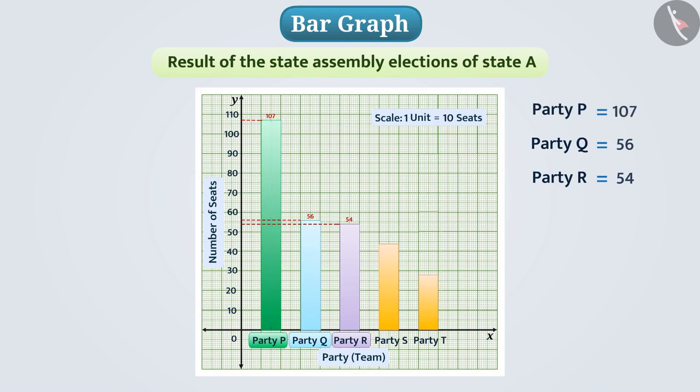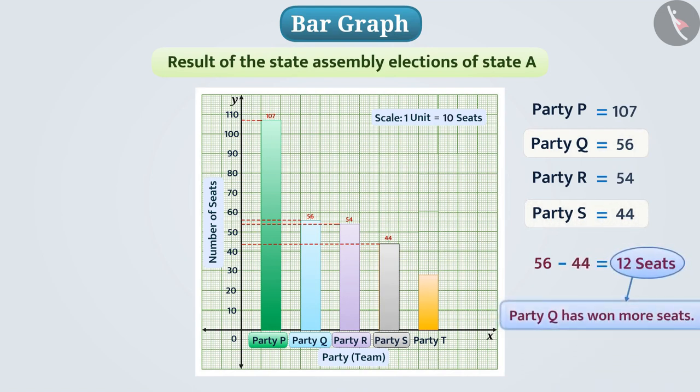Can you tell how many more seats did party Q win than party S? Absolutely right! We see that party Q has won 56 seats while party S has won 44 seats. Therefore, party Q has won 56 minus 44 is equal to 12 seats more than party S.